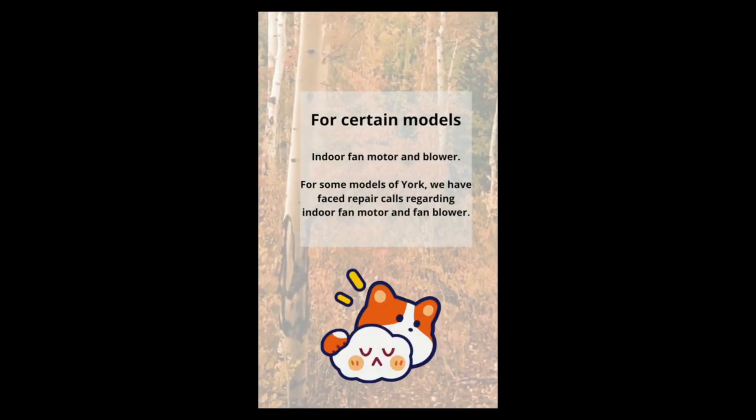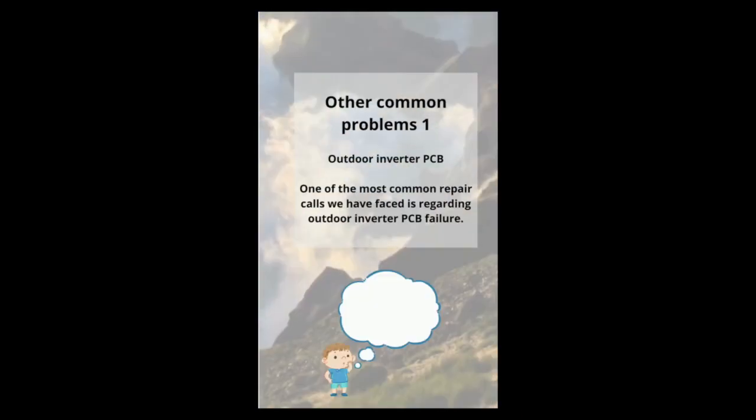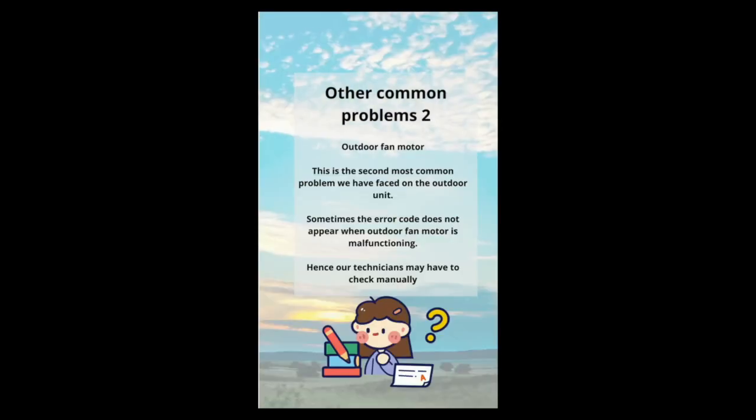For certain models, one of the common problems we have faced with York aircon is the indoor fan motor and blower. Another common problem is the outdoor inverter PCB. The second most common problem on the outdoor unit is outdoor fan motor malfunctioning, and sometimes the error code does not appear when the outdoor fan motor is malfunctioning.